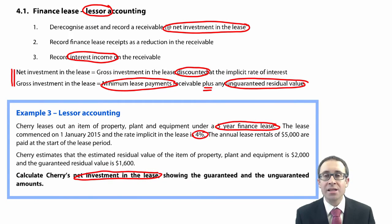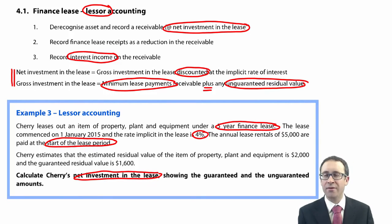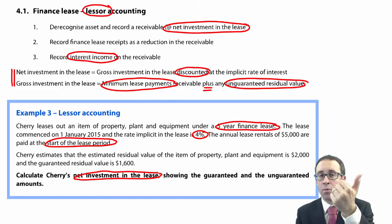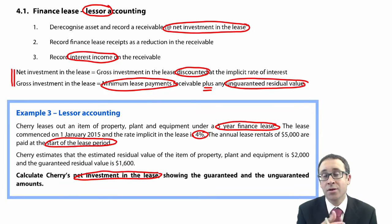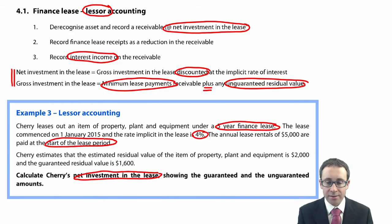The annual lease rentals of $5,000 are paid at the start of the lease period. That's very important because if it's a five-year lease the first lease payment due to us is at T0 — so T0, one, two, three, four — that's five payments from T0 to T4. It's not T1 to T5; that would be if they were in arrears. Because it's in advance it's T0 to T4 — vitally important. Cherry estimates that the residual value of the item of property plant and equipment is $2,000, and the guaranteed amount is $1,600.